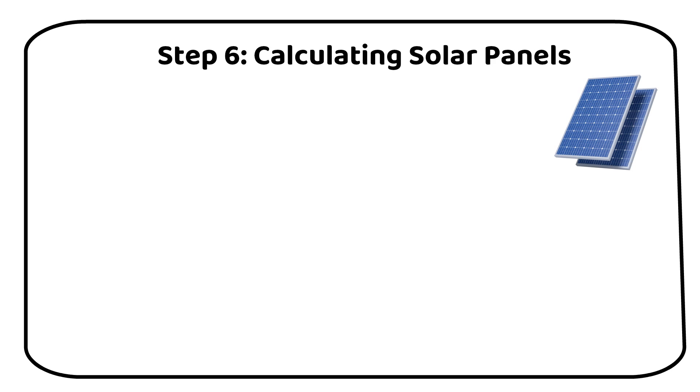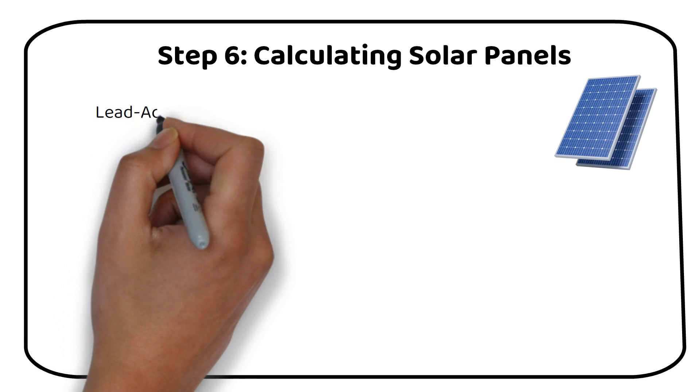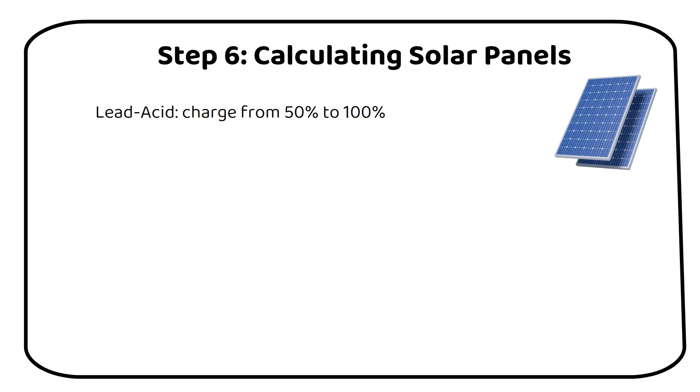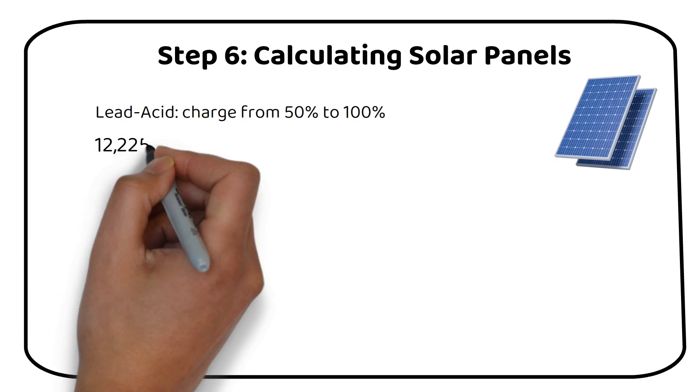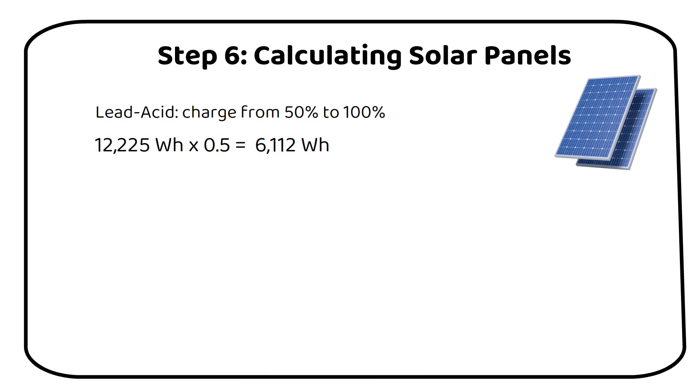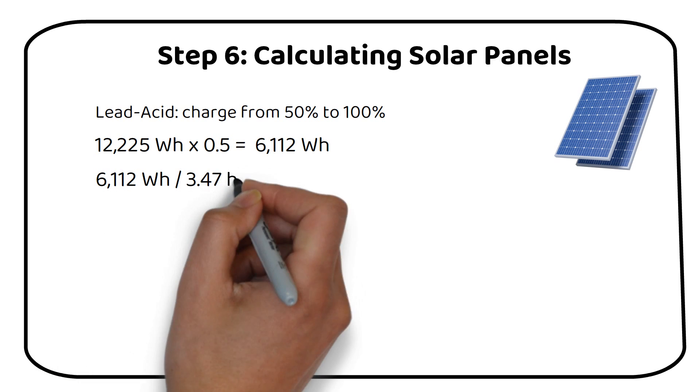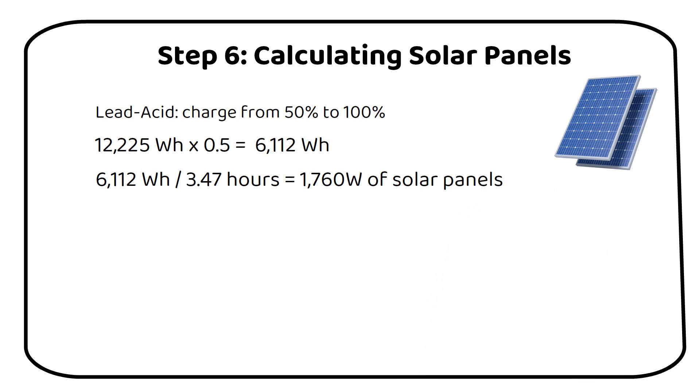Let's start with lead-acid batteries. Since you can only use 50% of lead-acid battery capacity, you only need to recharge the second half. For example, if your total battery capacity is 12,225 Wh, you will need to recharge 6,112 Wh in a day. This reduced figure reflects that you're only recharging from 50% to 100%. Now, divide this daily recharge requirement by the average sun hours. Using our previous example of Houston in December with 3.47 sun hours, the calculation would be 6,112 Wh divided by 3.47 hours equals 1760W of solar power. Therefore, you need around 1760W of solar panels to recharge the lead-acid battery in a day.